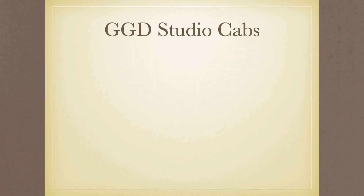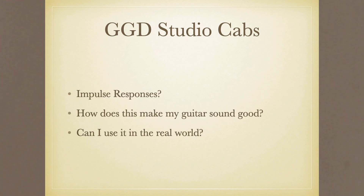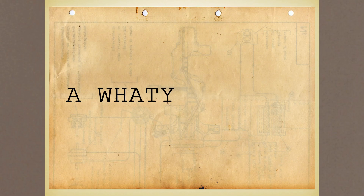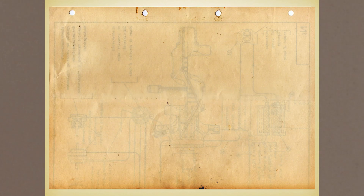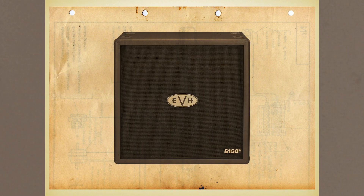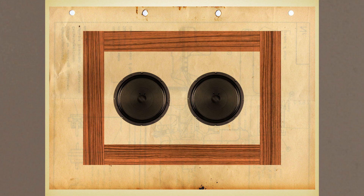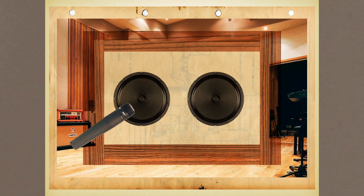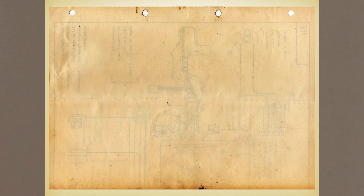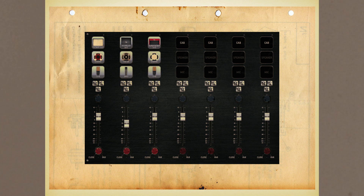Next up is our GGD StudioCab software - essentially a guitar cab impulse response loader. An impulse response is the digitized essence of a guitar cabinet, capturing its unique characteristics: the wood it's made from, the speakers it has, the room it's captured in, and the microphone it's captured with. This lets you take a guitar DI - a guitar signal without a cabinet - load this software onto it, and try out different guitar cabinets, layering multiple on top of each other or blending them uniquely.